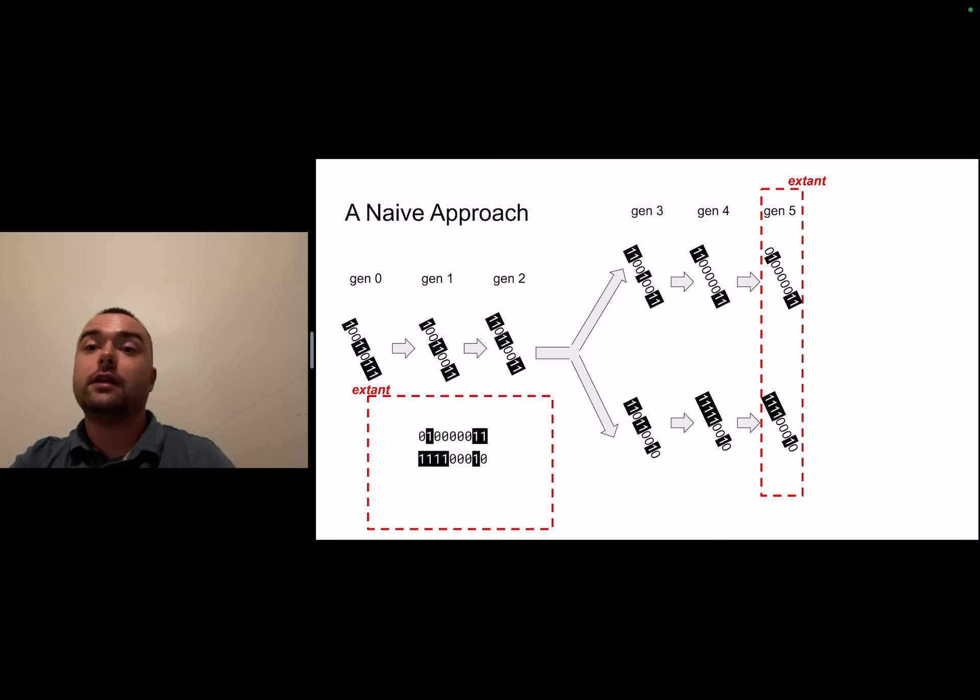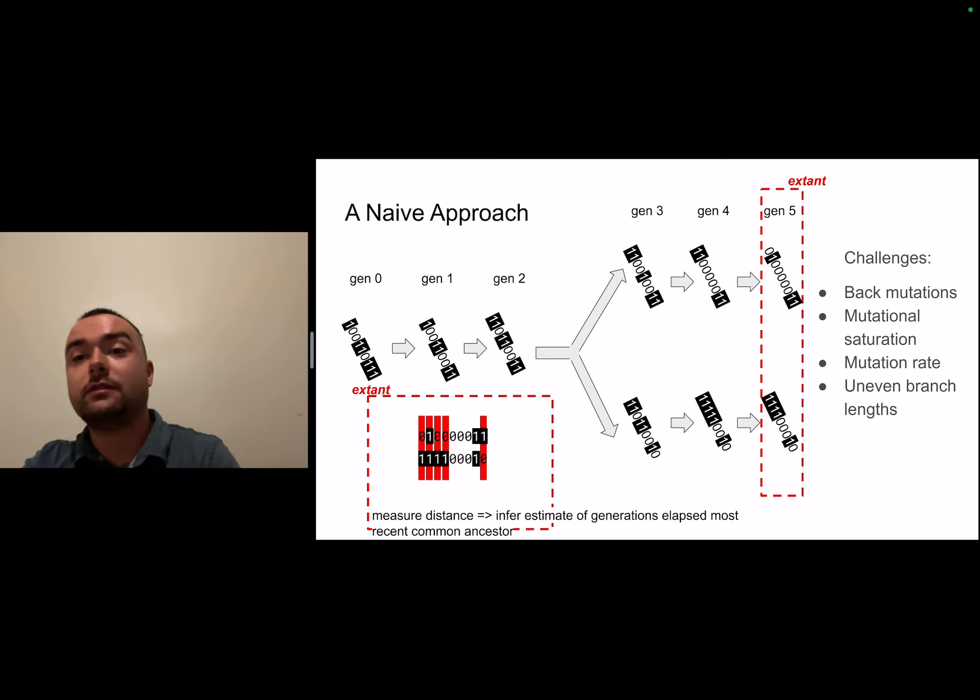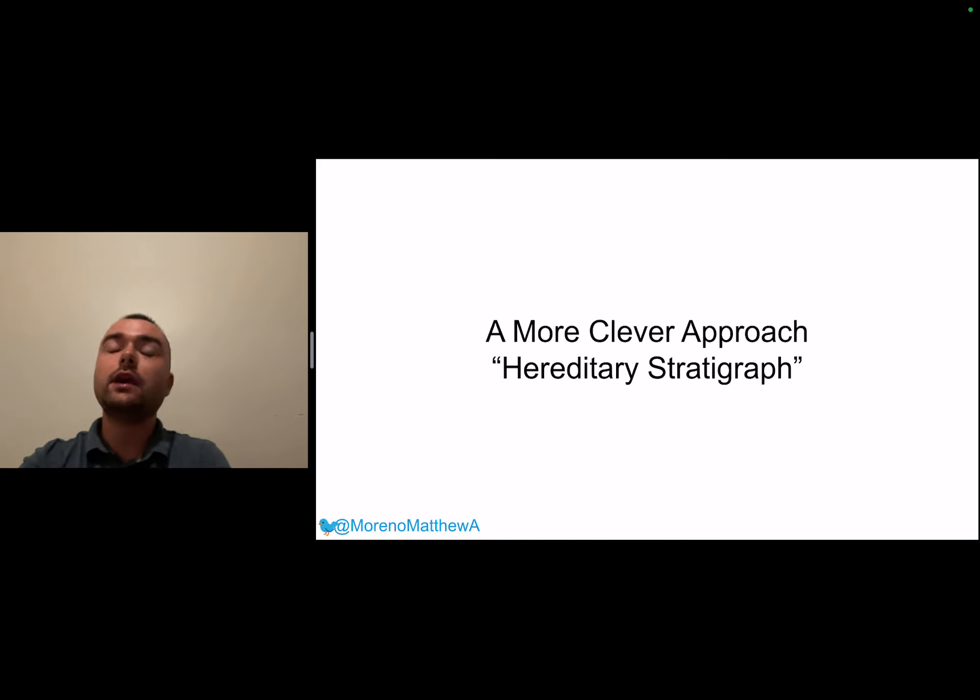We grab our two extant organisms and we can compare the number of sites that they have in common versus the number of sites that are different and do some math to infer an estimate of about how many generations elapsed between these two extant organisms back to their most recent common ancestor, which was in this case at generation two. However, as many of you are aware this kind of naive approach has a lot of issues and subtleties with the possibility of back mutations, mutational saturation, tuning the mutational rate, and also being able to detect uneven branch lengths.